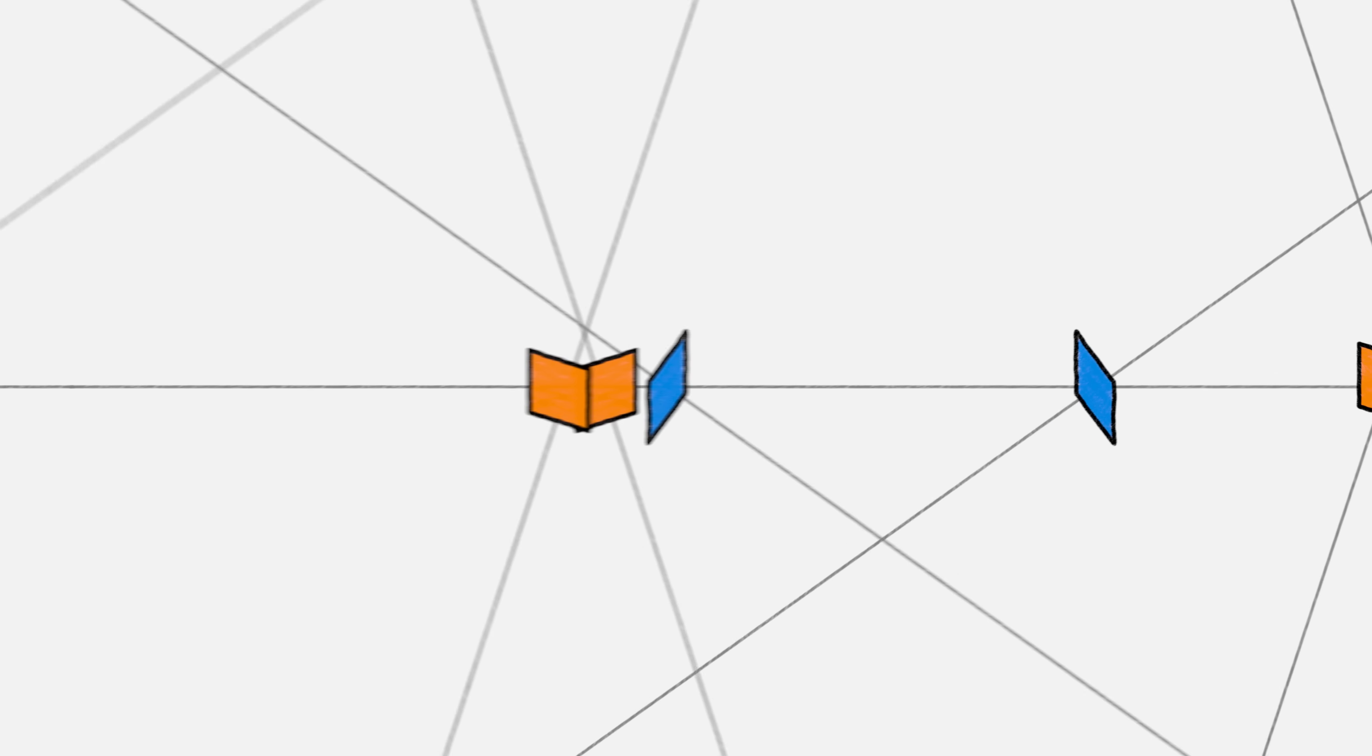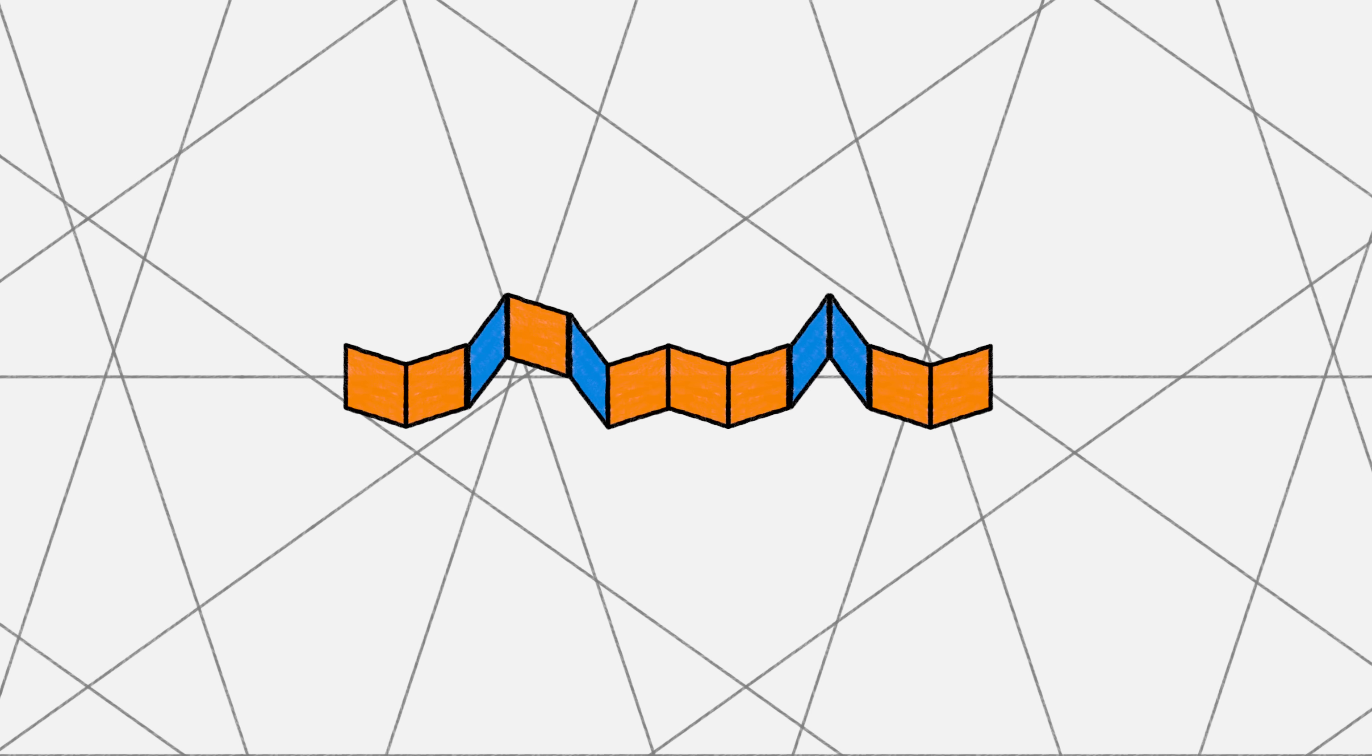To make a Penrose tiling, all you have to do is start with a pentagrid, and then at every point where two lines intersect, you draw a tile, oriented so the sides of the tiles are perpendicular to the two lines. This way, at the next intersection along the line, the sides of that tile will be parallel to the sides of the first tile, and the same at the next intersection, and so on, and you can slide them all together into a ribbon.